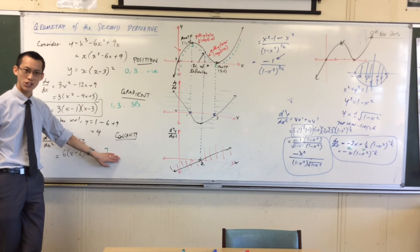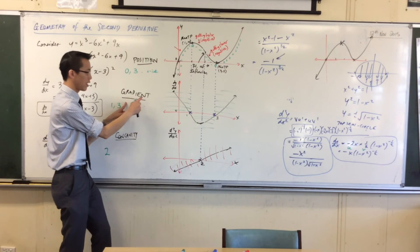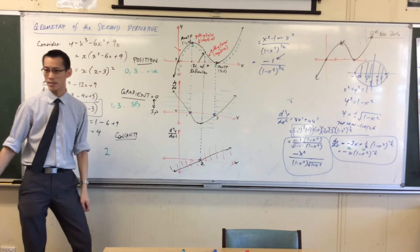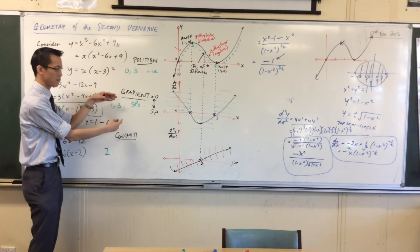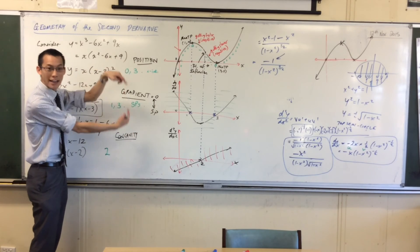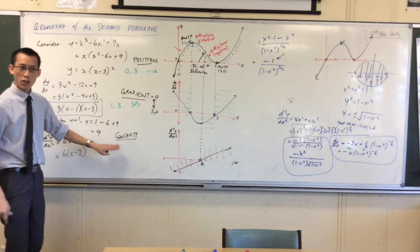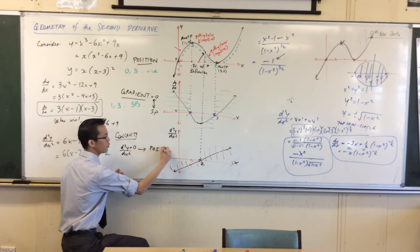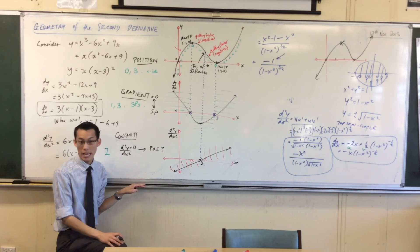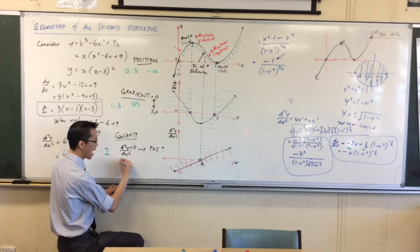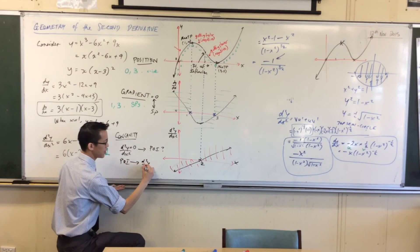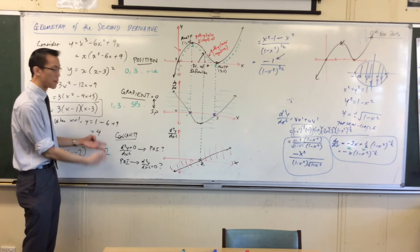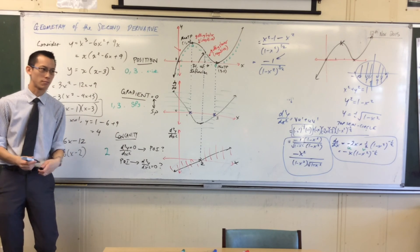Even more strange: you can have the second derivative being zero and not have a point of inflection. They are not like stationary points, where if you've got a gradient of zero that means a stationary point and vice versa. Here, if the second derivative equals zero, do I get a point of inflection? Well, maybe. And if I have a point of inflection, does that mean the second derivative is zero? Maybe. I will show you the special cases — but this is generally, usually, what happens.